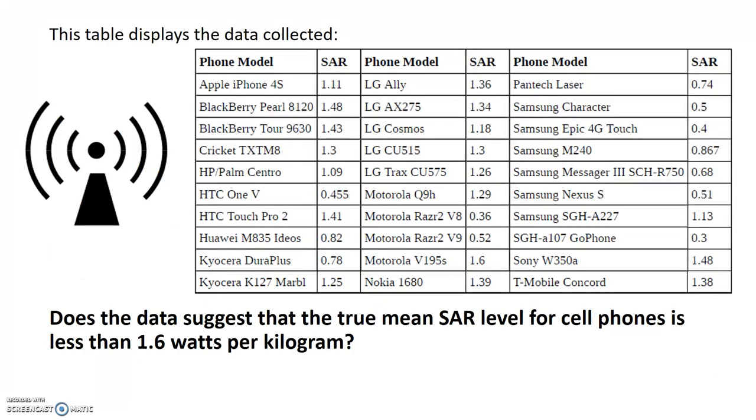Here's a table that displays all of the information for a random sample of 30 different cell phones. The main question here: does the data suggest that the true mean SAR level for cell phones is in fact less than 1.6 watts per kilogram?